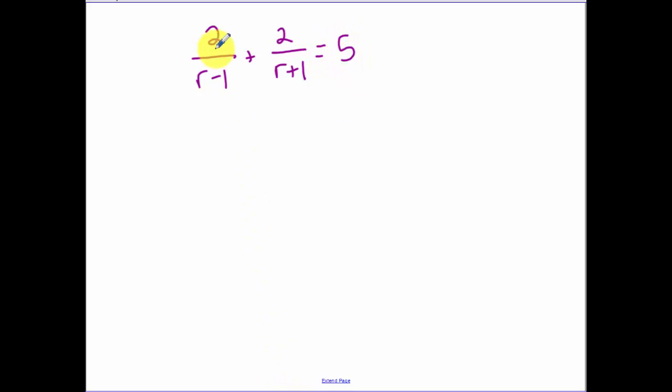Now multiply this one. Since I have two terms on the left here, we have to multiply both sides and every single term by our common denominator, which is r minus one times r plus one.